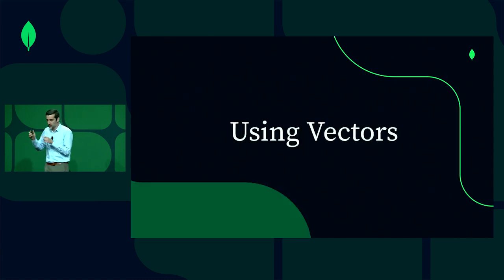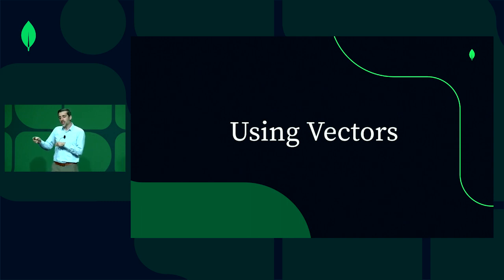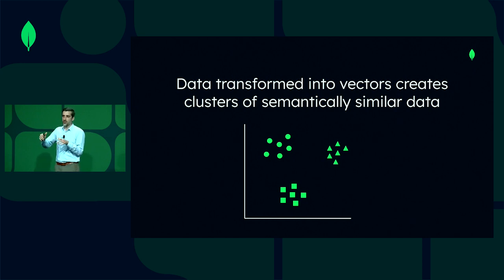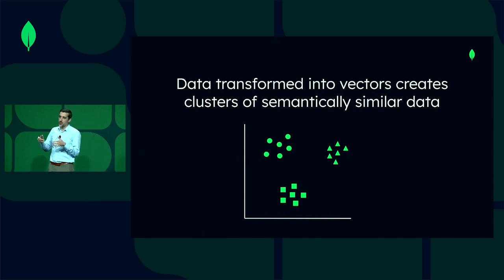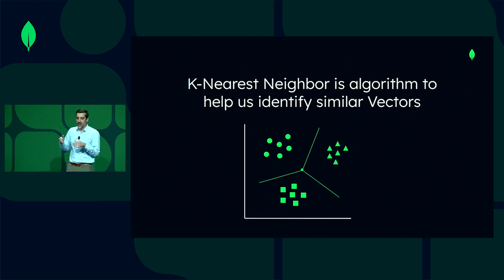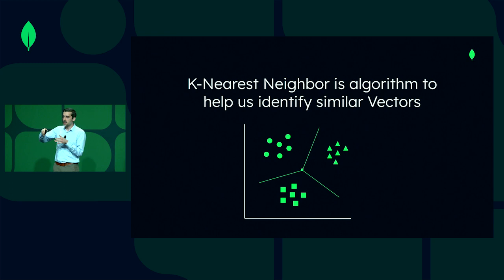So we've talked about vectors, how they relate to one another, and how they fall in this high-dimensional space. Data when transformed into vectors can create clusters that are semantically similar — groups of data that have some sort of relevance or relationship between them. K-nearest neighbor is a way to search through these vectors. It's an algorithm that lets you look at these vectors and find neighbors to them. K represents the number of neighbors you're looking for, and k-nearest neighbors is a way to find similar vectors to a target.